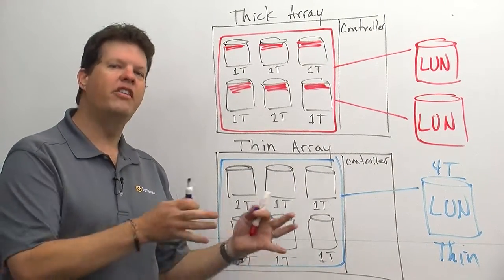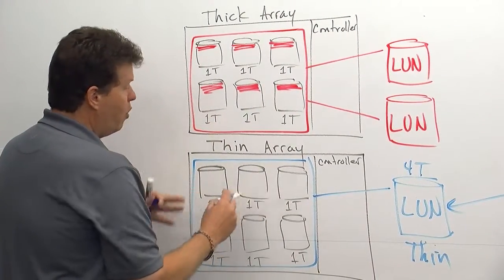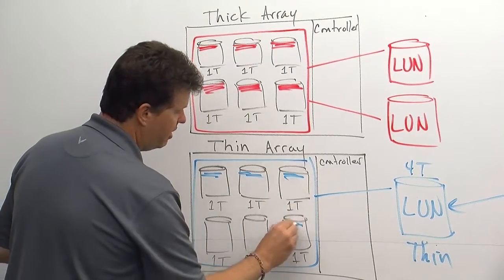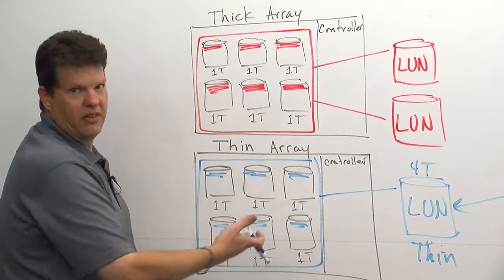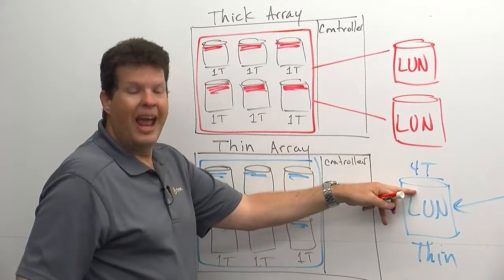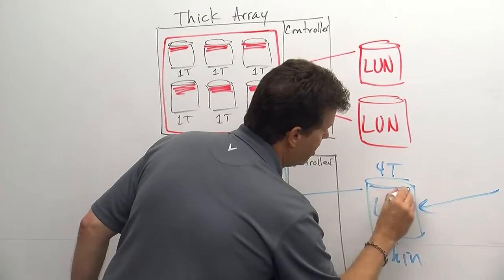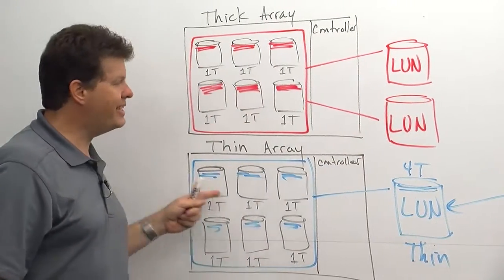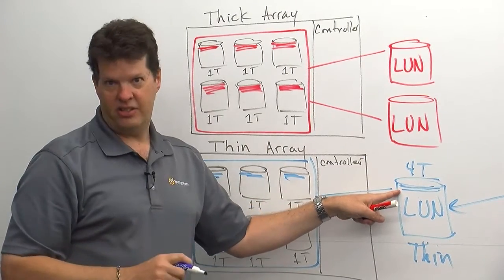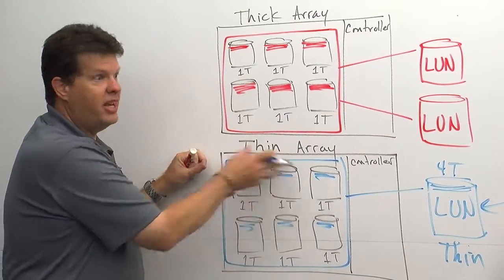Disk space is allocated on demand. So as we write data to this, the array will pull chunks of disk space from these disks here, and the size is going to be based on whatever the chunk size for the vendor is. They will go into this disk here, but only enough to satisfy the write request. So as data goes in there, we will only supply disk space to satisfy the needs of the amount of data that's there. So even though this is a four-terabyte LUN, we may be using just a very small amount of space here.